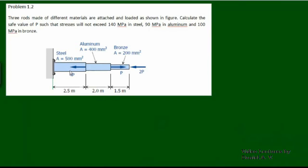We have three rods made of different materials: steel, aluminum, and bronze. They are connected together to form a composite member, and loads have been applied at different positions with different magnitudes and directions. 2P is applied at one point, P at another, and 4P at a third point. We need to calculate the value of P such that the stress in each material does not exceed the specified limits: 140 MPa in steel, 90 MPa in aluminum, and 100 MPa in bronze.